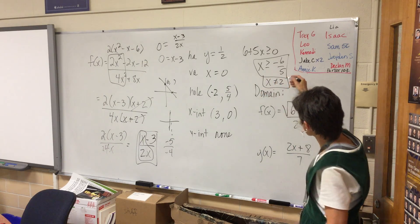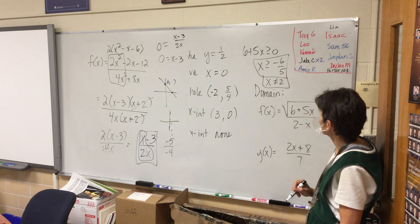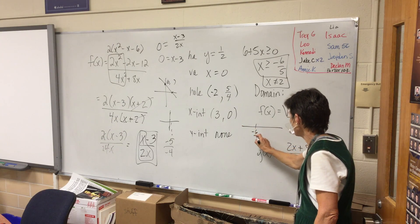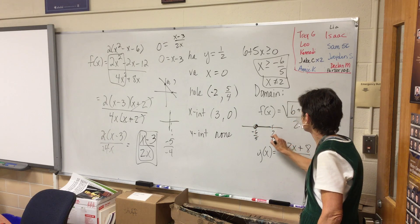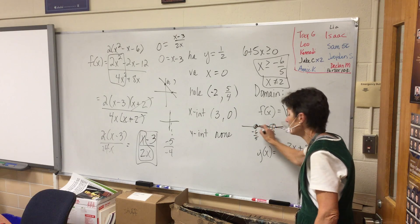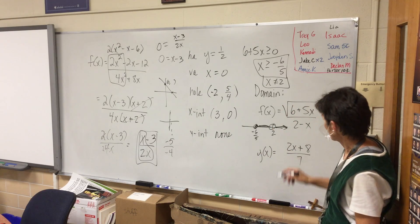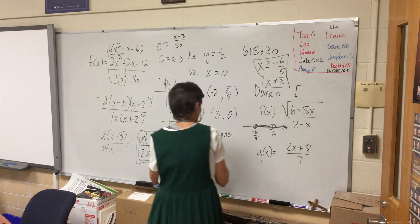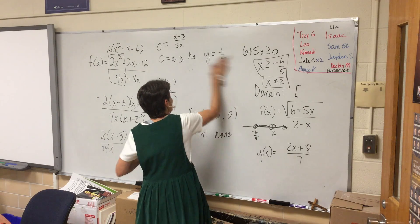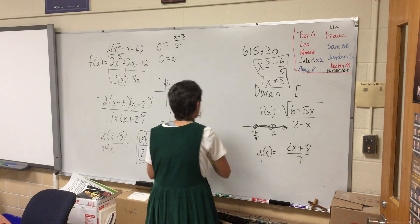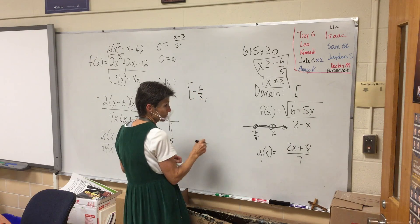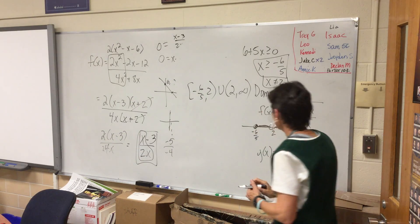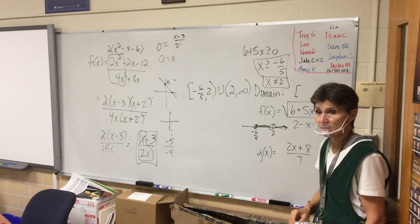So now my domain I have to write that as an interval. It's everything bigger than or equal to negative 6 fifths except 2. So I like to put that on the number line. It looks like this. I'm going to have a bracket at negative 6 fifths and I'm going to go to 2, and then I'm going to go from 2 to infinity. Does that make sense to you in terms of domain?